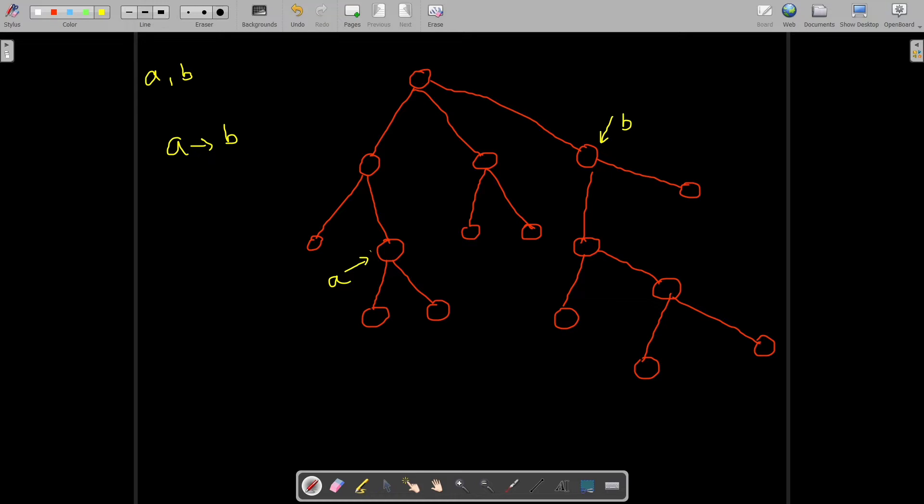There is one more condition: we can enter vertex B only if the XOR of all the weights in the path to B is 0. If there is any such path that satisfies all these conditions, then we have to print yes, otherwise no.